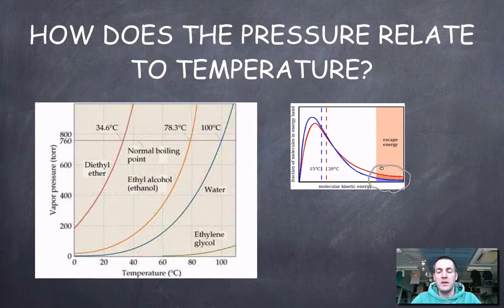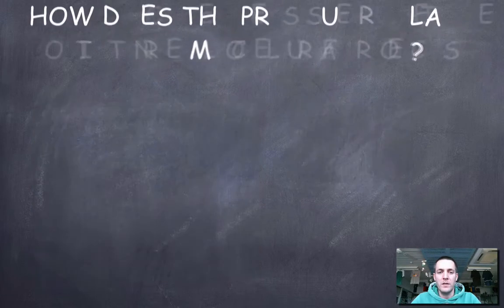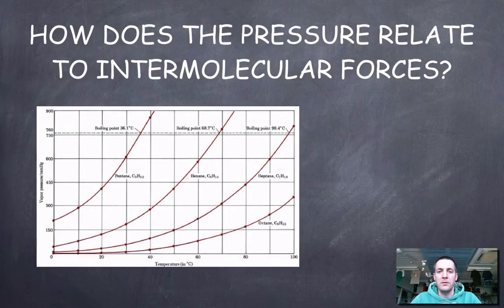We can remember that these graphs always take this curved shape — explaining exactly why is a bit beyond what we'll cover here. Now let's look at how the vapor pressure a liquid exerts depends on the intermolecular forces within that liquid.